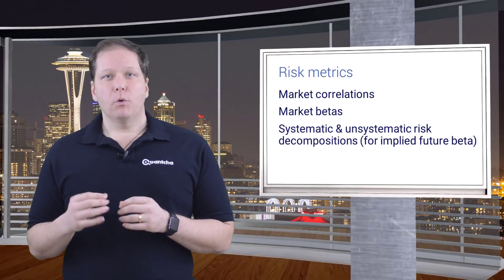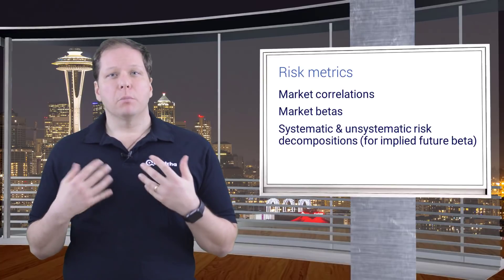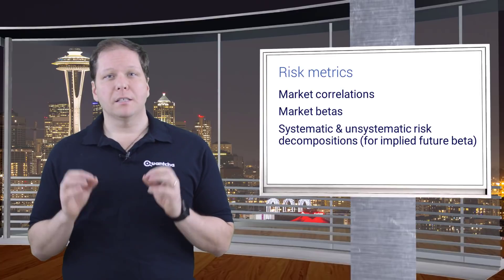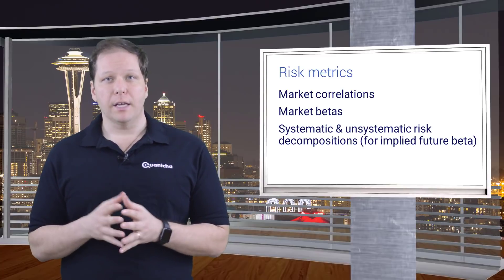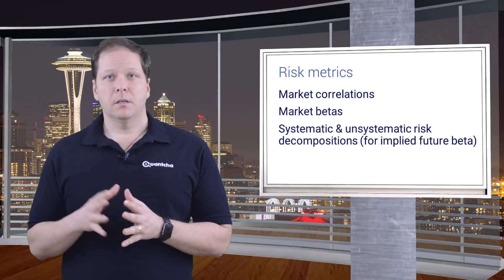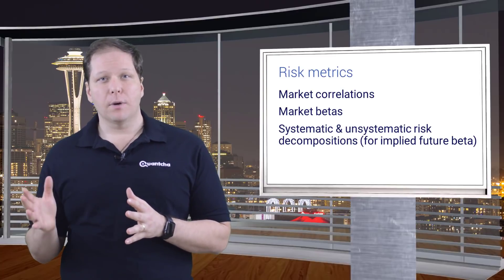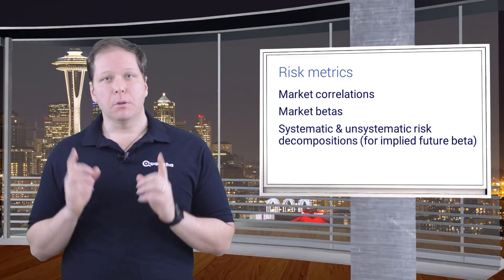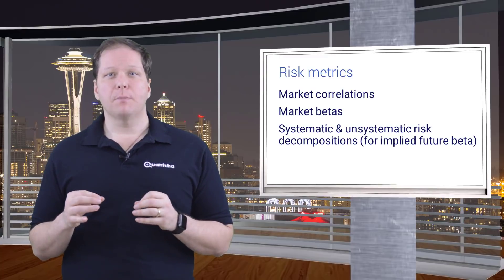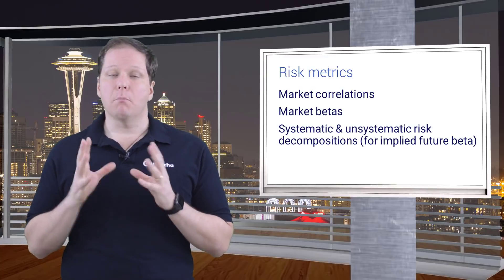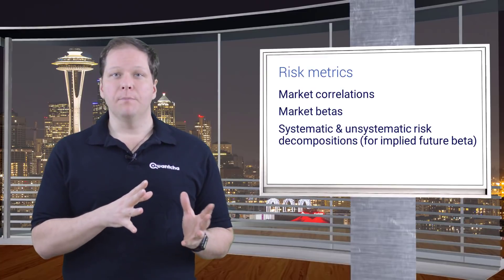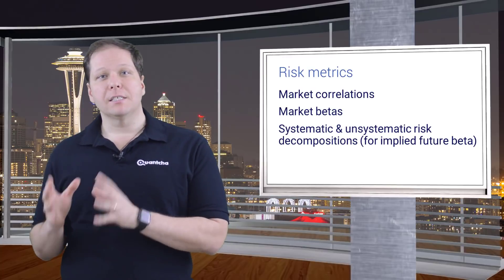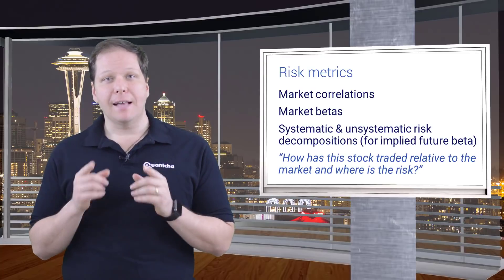Finally, we provide a measure of implied future beta, which is based on the decomposition of the underlying risk. The systematic risk articulates how much the implied volatility is expected to be based on market volatility, whereas the unsystematic risk is independent to that stock.